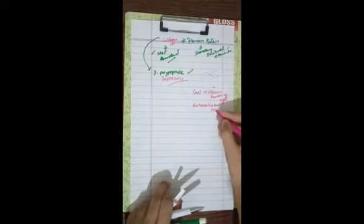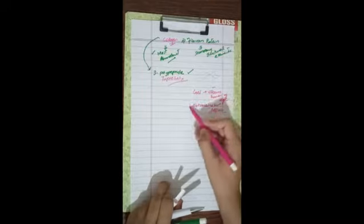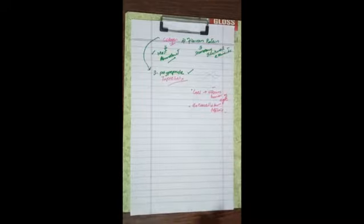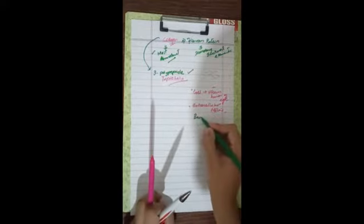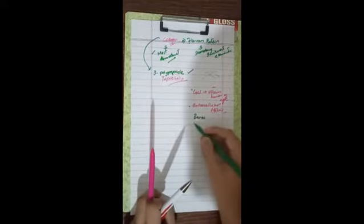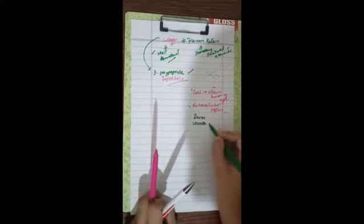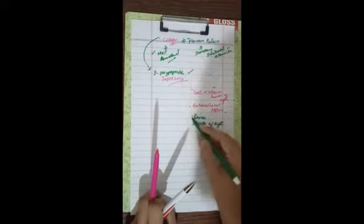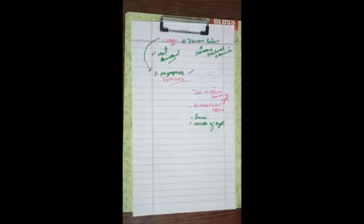Collagen is present in the extracellular matrix. Besides this, it is present in the cornea, fibers, and bones.